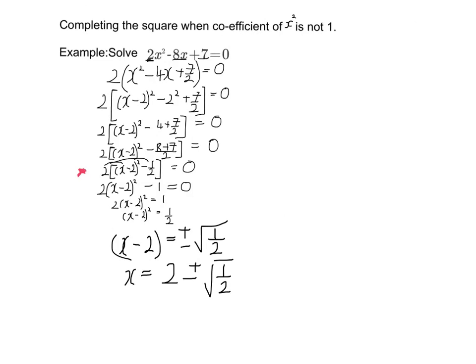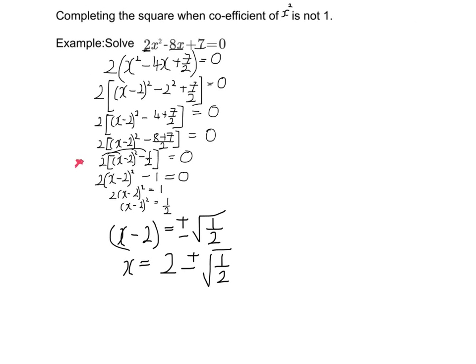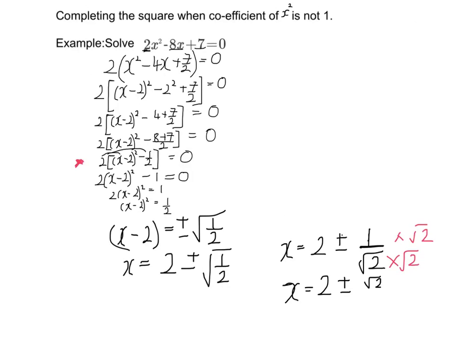I can tidy that up a little bit by saying I've got 2 plus or minus 1 over root 2. Ideally, I've got a root on the bottom — I should really rationalise the denominator. So if I times that by root 2 and that by root 2, I get x is 2 plus or minus root 2 over 2. And those are my solutions.